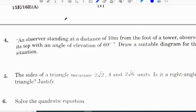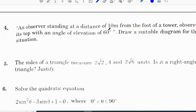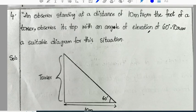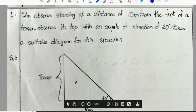Fourth question: An observer standing at a distance of 10 meters from the foot of the tower observes its top with an angle of elevation of 60 degrees. Draw the suitable diagram for this situation. As I told, situation diagram is definitely a question in board exam. This is the diagram based on the given question.